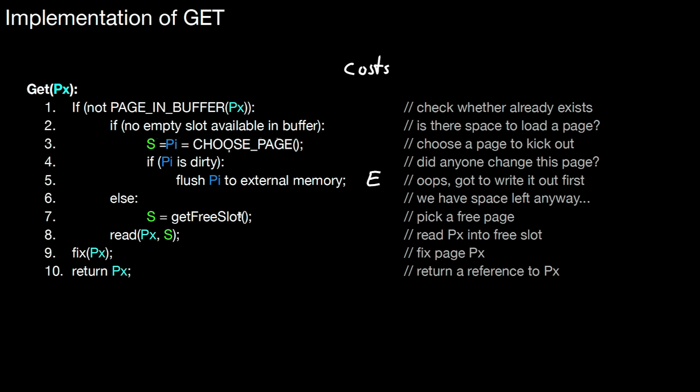Then again, get a free slot. This is just determining in the main memory list of free pages, not so expensive. Reading of course requires an I/O operation, typically a random I/O read operation. Fixing is cheap and returning reference is also cheap. So bottom line, what happens is even though you're only interested in a single page, actually you're performing, in the worst case, two random write operations to retrieve a single page. The worst case is something like two random I/Os for doing that. That is important to keep in mind.